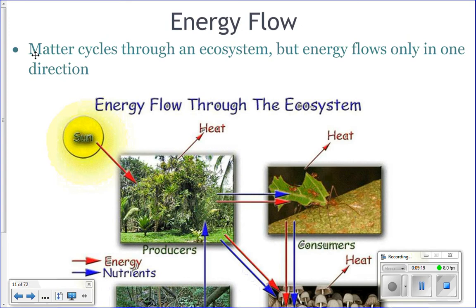Matter, which is the actual physical atoms that you are made of, so when you eat your food, the actual physical atoms that that food is made of, that matter gets cycled through an ecosystem. It gets reused. Matter is neither created nor destroyed, so it gets reused.